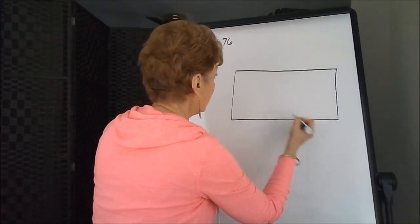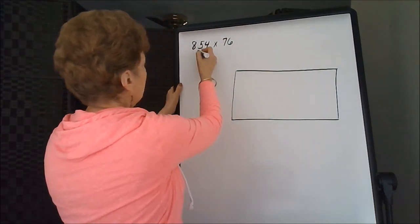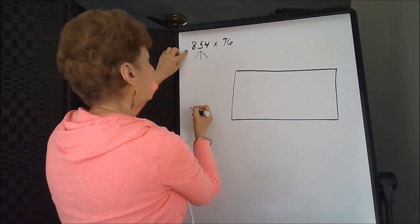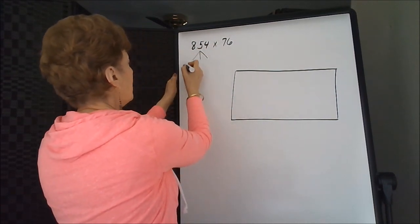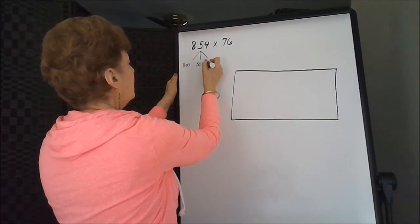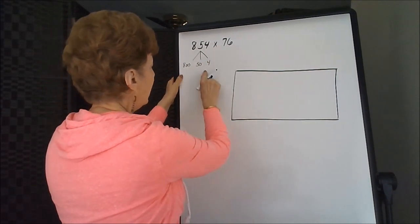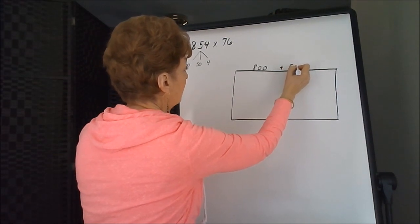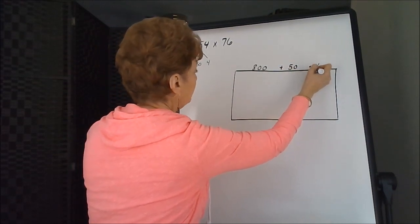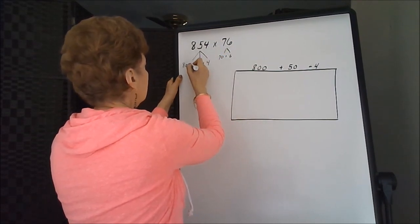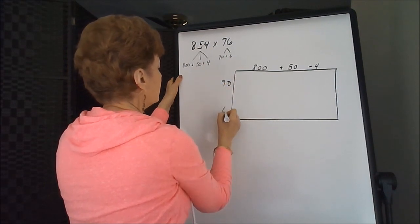There will be three sections to this box. When we split the 854, we're going to expand it to 854. So that has to go along the top, 800 plus 50 plus 4. 76 splits to 70 plus 6, so we're going to do a 70 and a 6.